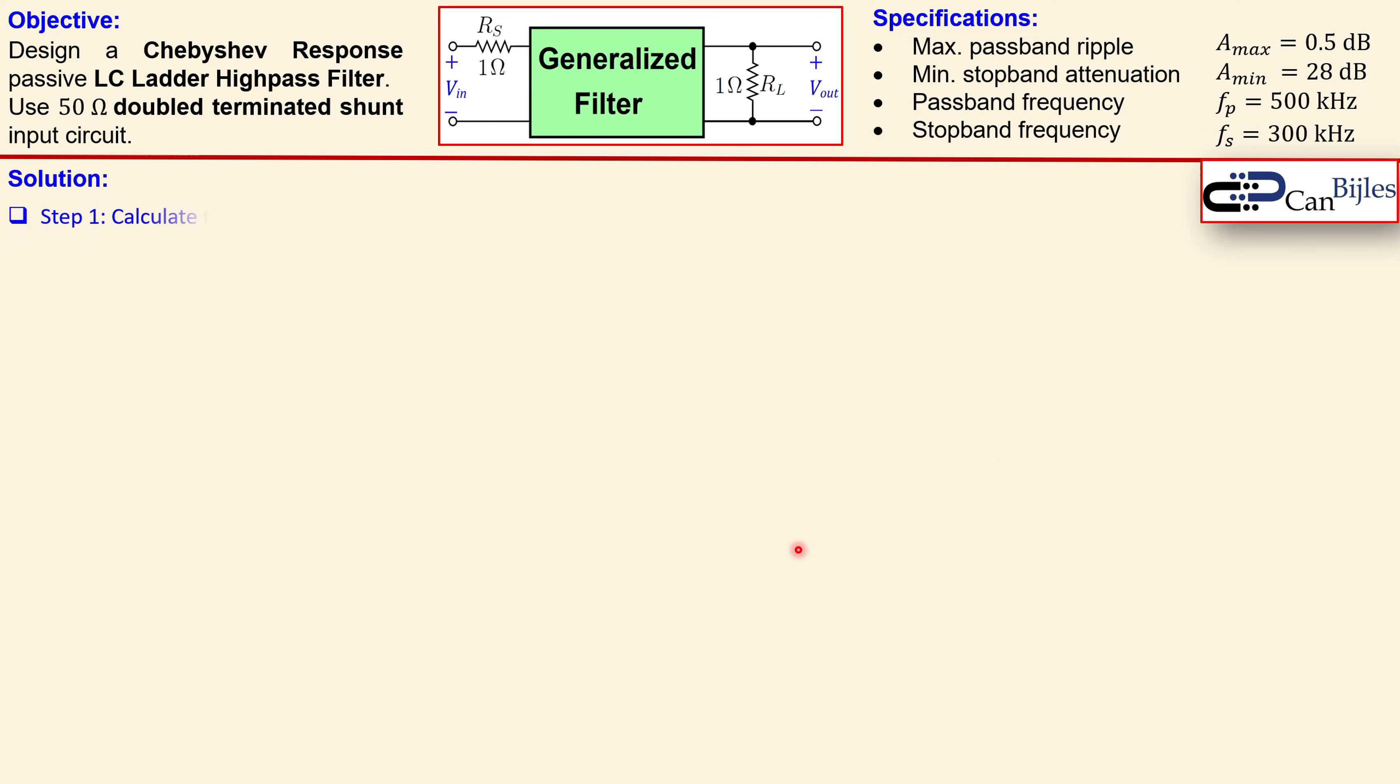The solution: we start with step one, calculation of the filter order, and we need to find the coefficients, the epsilon p related to the A max. We look at 0.5 dB and when you substitute the values you get 0.3493. In a similar form for epsilon s for the A minimum, we substitute 28 here and you get 25.099.